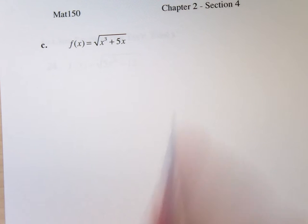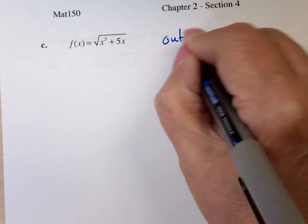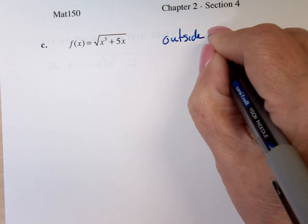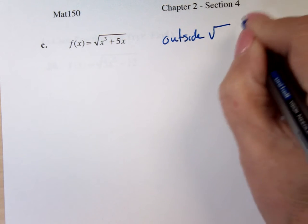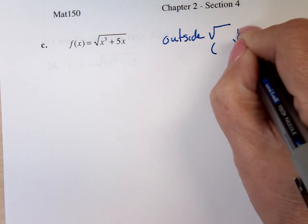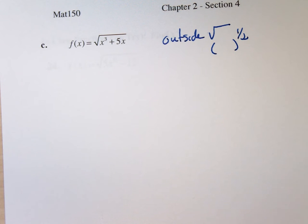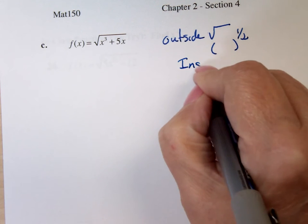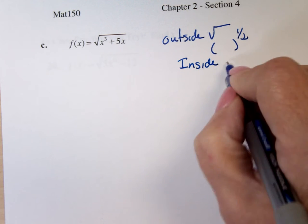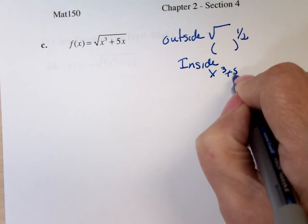In this case, what's the outside function? Just the radical, right? Or blob to the one-half power. And what's inside? X cubed plus 5X.